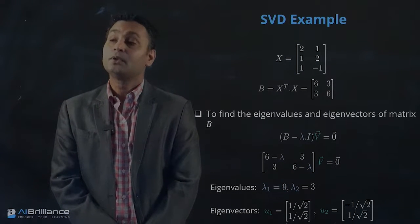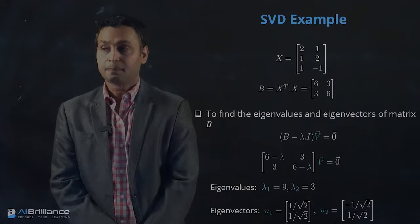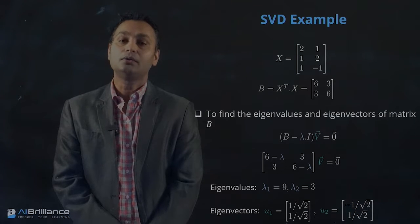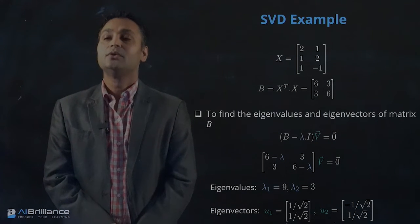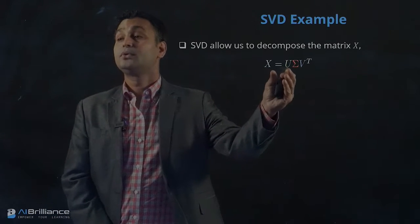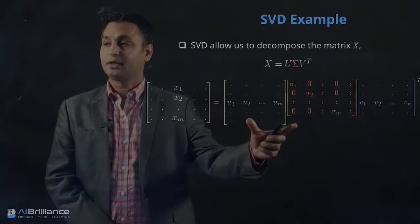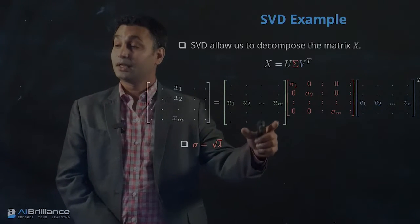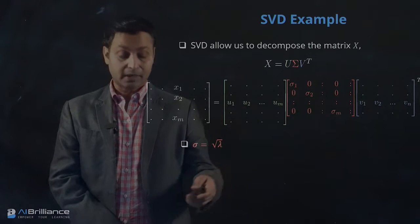So these are the two pieces of information. We took X, computed X times X transpose to get A, and X transpose times X to get B. We solved the eigenvalue problem for both A and B and found the corresponding eigenvectors and eigenvalues. Now we can use those values to do the SVD. X equals U sigma V transpose, and the sigmas are essentially the square roots of the different eigenvalues we found.